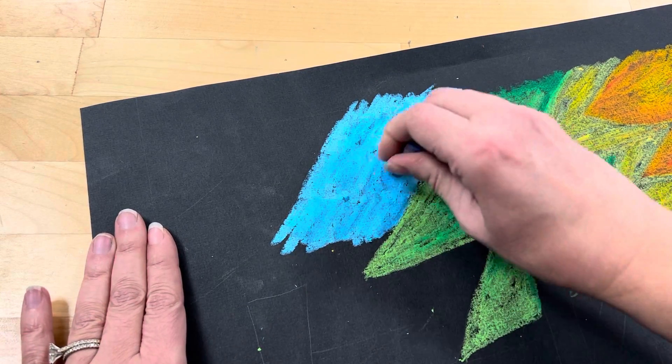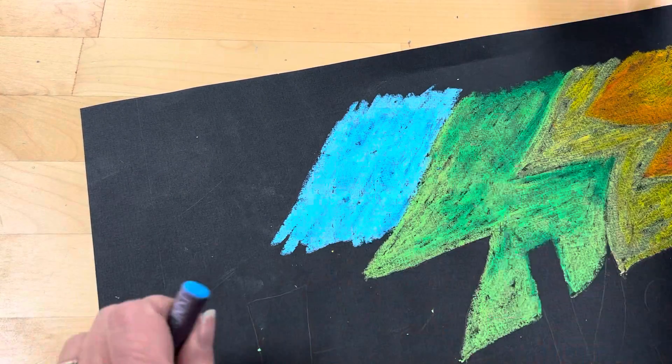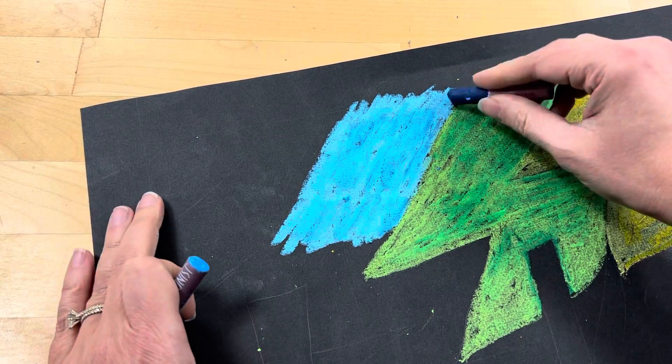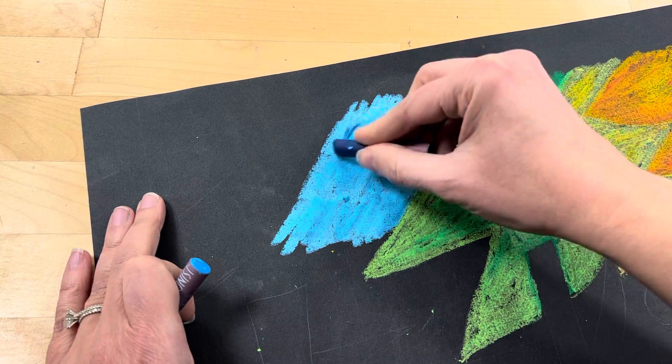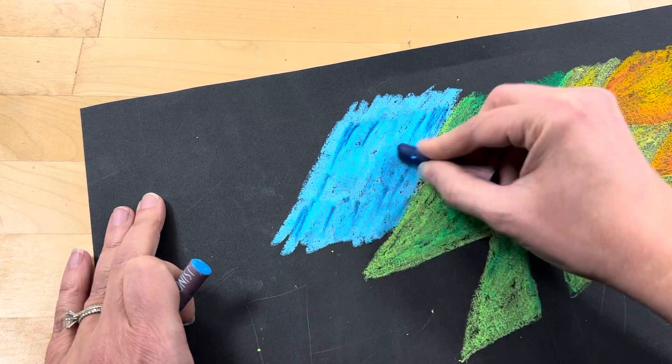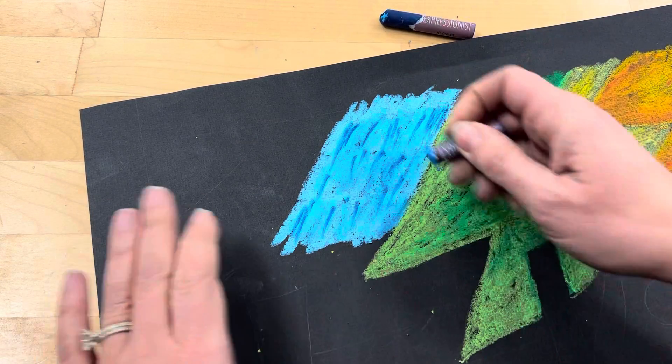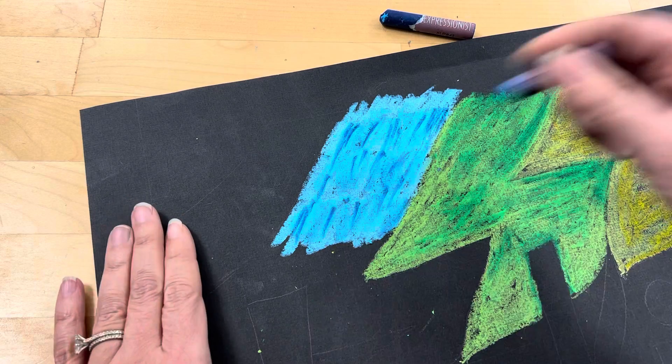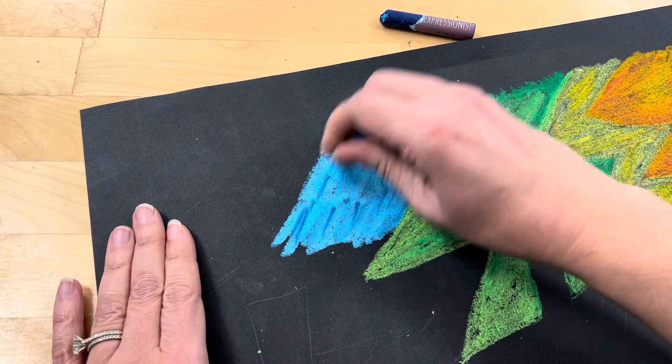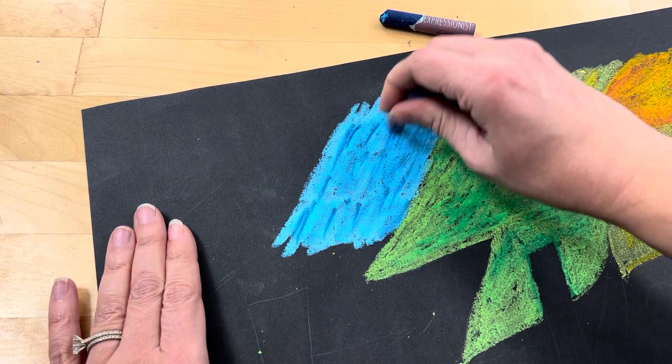So you can kind of work in circular motions, the dabbing, you can grab some darker areas. And the more pastel that's on there, the more easily these colors will blend in. So I added some dark and on top of the dark, I'm going back with some medium to kind of blend that down in.